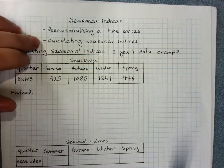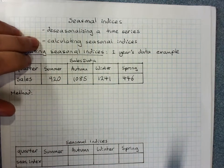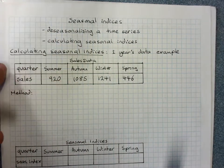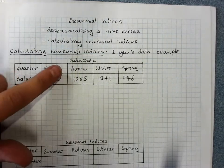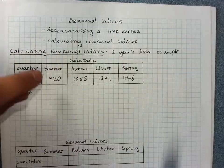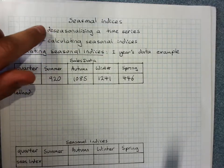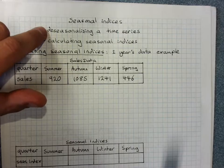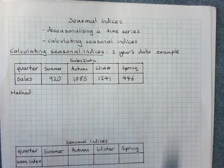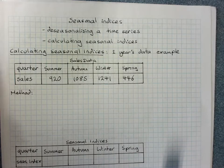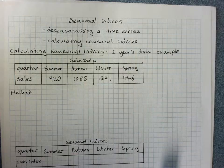Calculating seasonal indices and de-seasonalizing a time series. We need to be able to calculate seasonal indices so that we can use them, and the main way we would use them is de-seasonalizing a time series — getting rid of all of that variation in a seasonal set of data so that we can just look at the overall trends. If we wanted to fit a trend line, we'd usually de-seasonalize our data first.